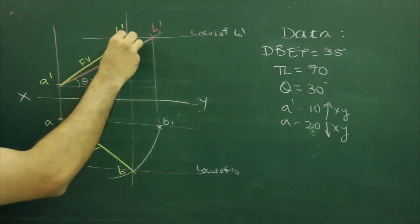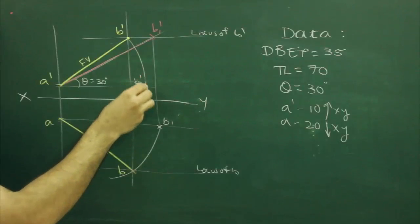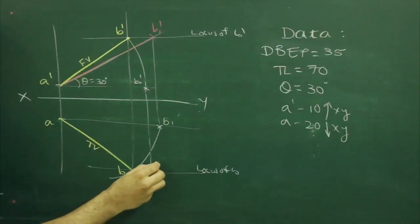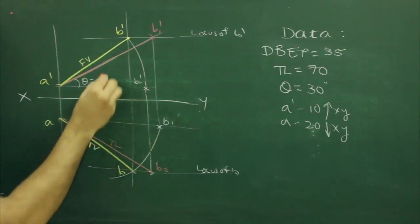In A dash to B1 dash, rotate in here, we get B2 dash. Project straight down. Wherever it will cut, that is B2. Join. So this is true length.